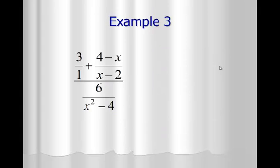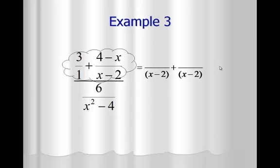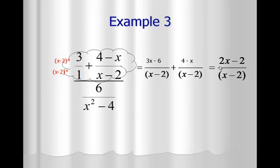On the last problem, we cloud the top where we're adding fractions. The common denominator is 1 times x minus 2, which is x minus 2. The first fraction multiplies by x minus 2, and distributing on top gives 3x minus 6. The second fraction already has the common denominator and stays 4 minus x. Combining like terms: 3x plus negative x is 2x, and negative 6 plus 4 is negative 2, giving 2x minus 2 over x minus 2 as the answer to the cloud.